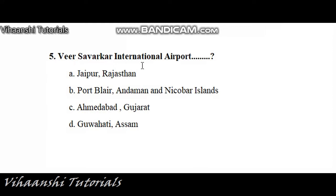Next, fifth question: Veer Savarkar International Airport. Option A: Jaipur, Rajasthan. Option B: Port Blair, Andaman and Nicobar Islands. Option C: Ahmedabad, Gujarat. Option D: Gauhati, Assam. The right answer is B — Port Blair, Andaman and Nicobar Islands.